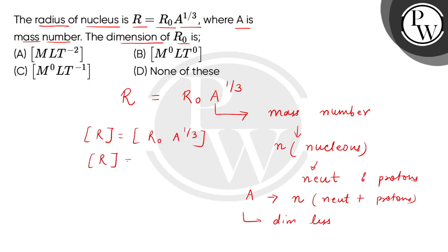The dimensions of R is equal to the dimensions of R₀. Because R is a radius which is a fundamental quantity, length. So R₀ will also be fundamental quantity length. So from here we get the correct answer, option B. Thank you.